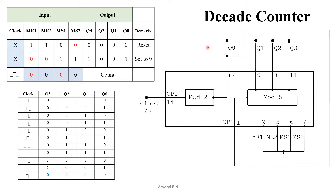For the decade counter, this is the circuit connection we are going to use. MR1, MR2, MS1, MS2 will be connected to ground. The clock input will be given to the mod 2 counter — that is, CP1 is connected to the clock. The output Q0 is connected as the clock input to the second counter, CP2. The outputs are Q0, Q1, Q2, and Q3, where Q0 is the LSB and Q3 is the MSB.